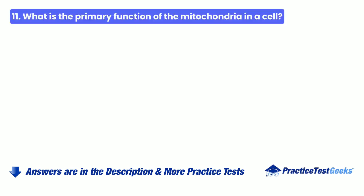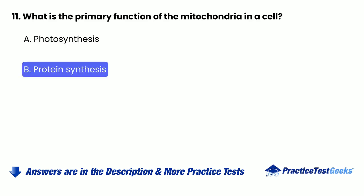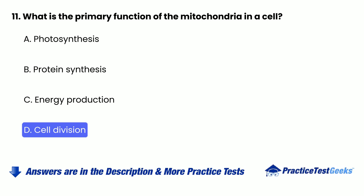Question 11: What is the primary function of the mitochondria in a cell? A. Photosynthesis. B. Protein synthesis. C. Energy production. D. Cell division.